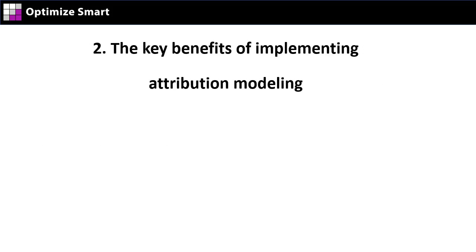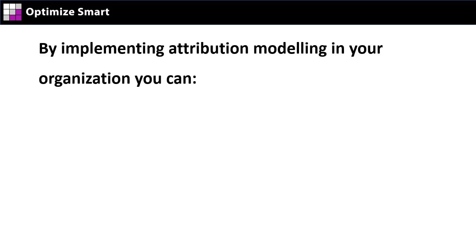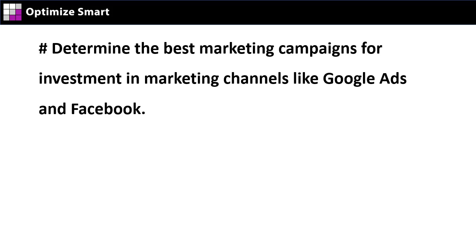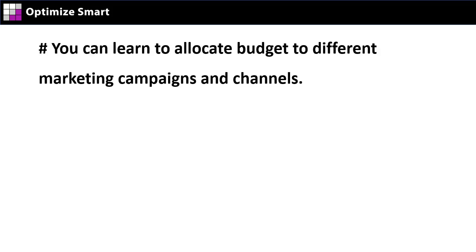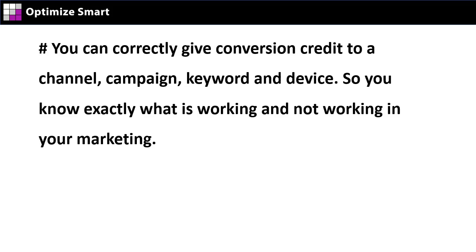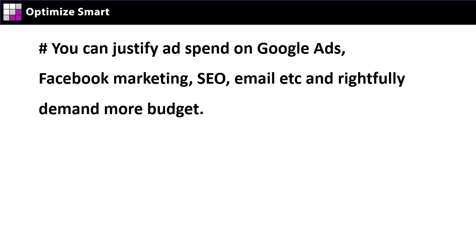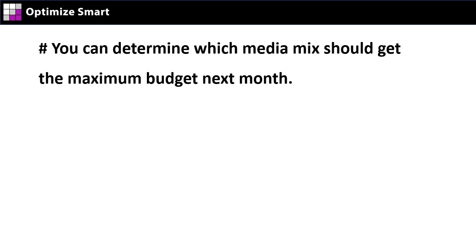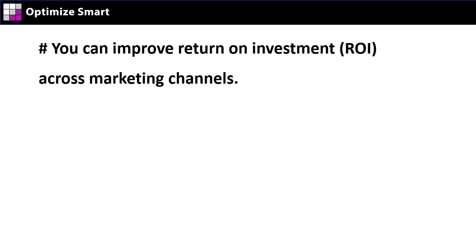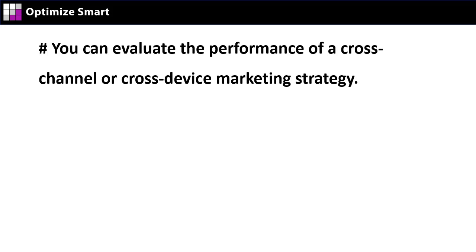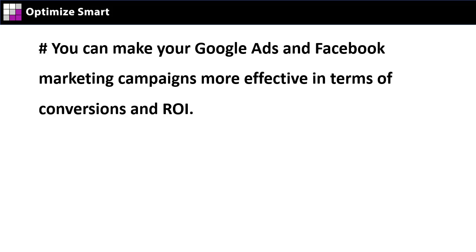The key benefits of implementing attribution modeling: you can determine the best marketing campaigns for investment in channels like Google Ads and Facebook; you can allocate budget to different marketing campaigns and channels; you can correctly give conversion credit to a channel, campaign keyword, and device, so you know exactly what is and isn't working; you can connect marketing activities across devices; justify ad spend on Google Ads, Facebook, SEO, email, etc. and rightfully demand more budget; determine which media mix should get the maximum budget next month; improve return on investment across marketing channels; evaluate the performance of a cross-channel or cross-device marketing strategy; optimally balance your digital marketing portfolio; and make your Google Ads and Facebook campaigns more effective in terms of conversions and ROI.